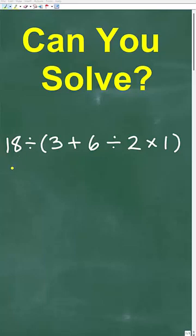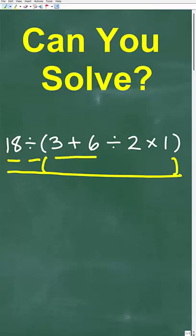Let's see if you can do this basic math problem without using a calculator. We have 18 divided by parentheses, 3 plus 6 divided by 2 times 1.